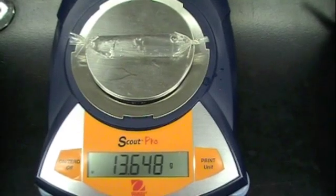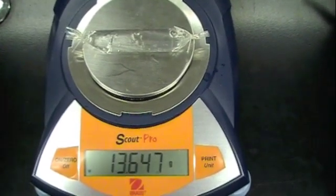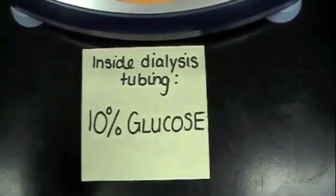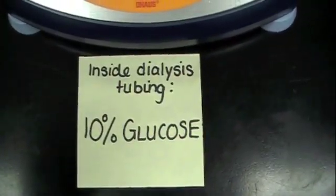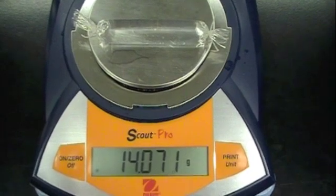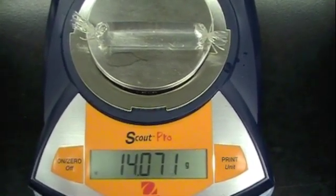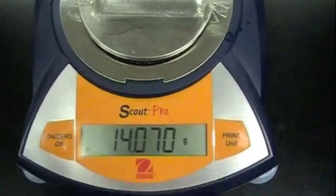We're going to be measuring the mass change of the dialysis tubing after they've been left in the beakers. 13.647 grams is the starting mass of the tube containing glucose. Conversely, the starting mass of the tube that contains water is 14.070 grams.